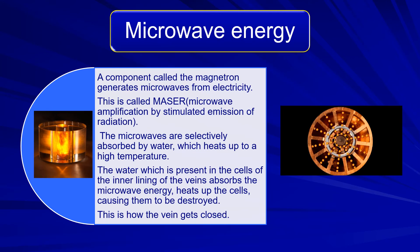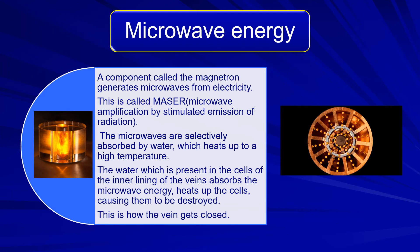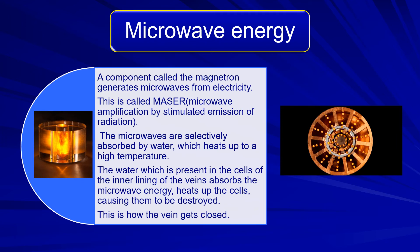Microwaves are selectively absorbed by water, which then heats up to a very high temperature. We all know that water is present in all cells of the body, and the cells of the inner lining of the veins will absorb this microwave energy and get heated up, causing them to be destroyed. This is how the veins can get treated by microwave energy.